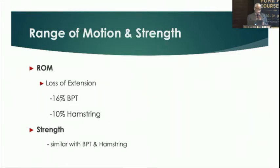Range of motion: flexion is almost equal with all grafts. However, with bone patellar tendon, loss of extension is reported at 16 degrees, versus 10% with hamstrings. In long-term studies, most of this extension loss resolves over time. Strength is equal with both bone patellar tendon and hamstrings.